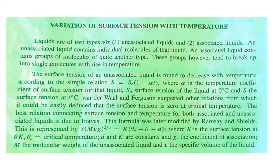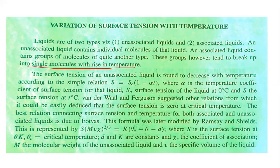What happens to the surface tension when the temperature increases? Liquids are of two types: unassociated liquids and associated liquids. An unassociated liquid contains individual molecules of the same type. An associated liquid contains a group of molecules of quite another type. For example, pure water is an unassociated liquid, while salt water contains associated molecules. These groups tend to break into single molecules with the rise in temperature. The surface tension of an unassociated liquid is found to decrease with temperature according to a simple relation.